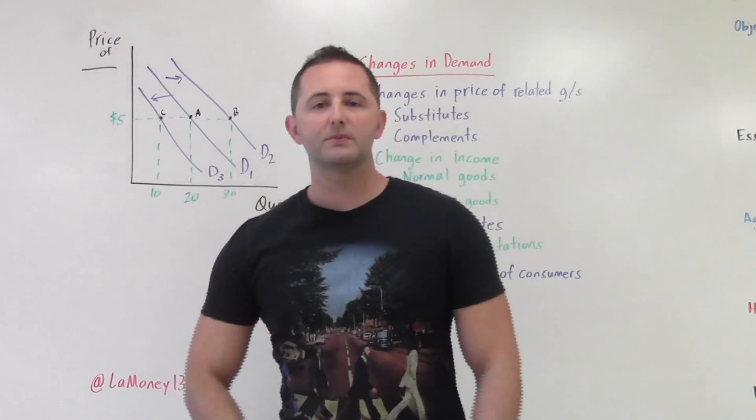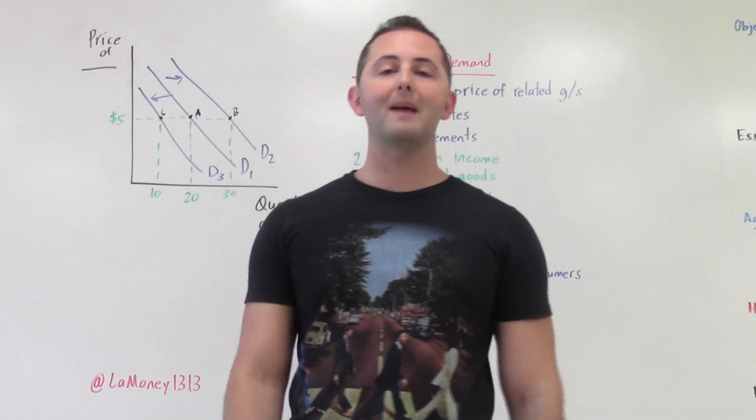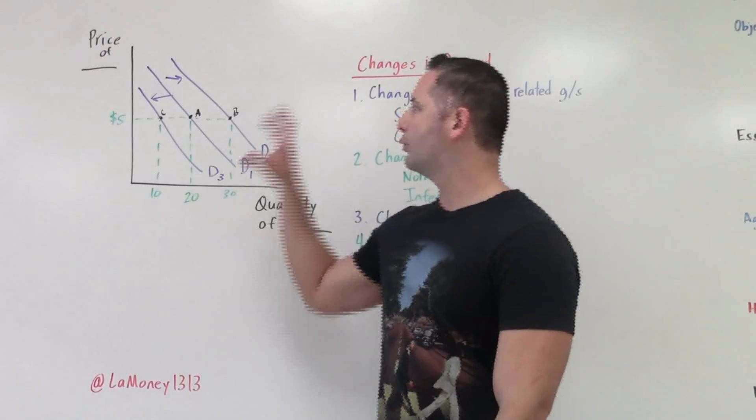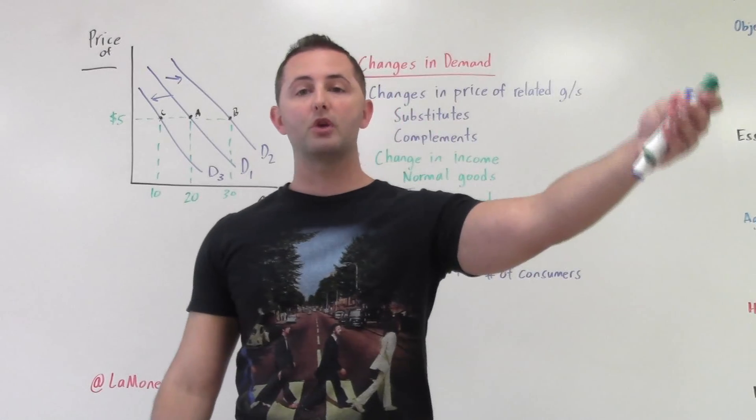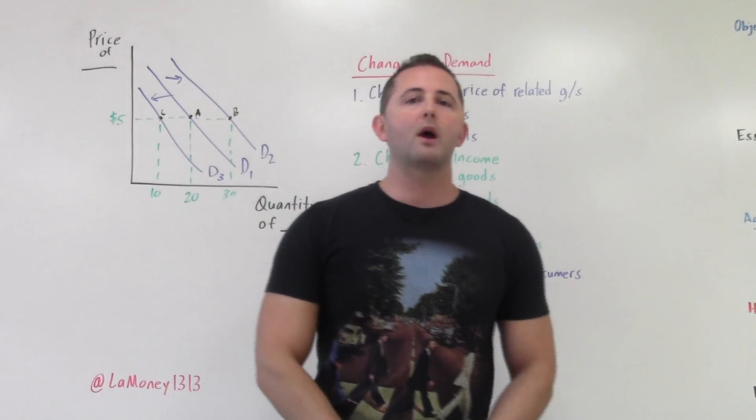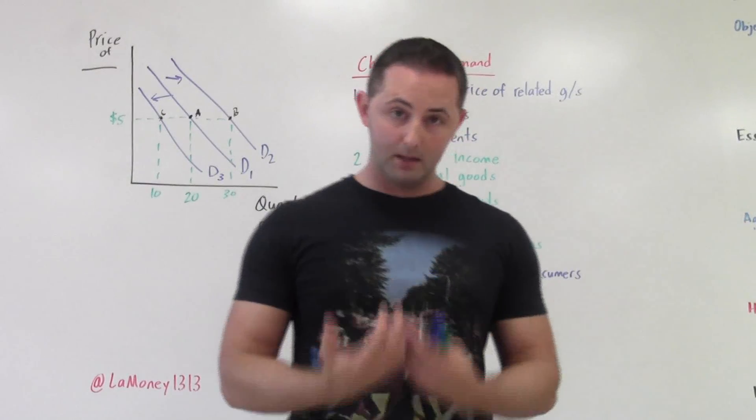Changes in income. This one's pretty basic. If you have more money, guess what you're going to do? You're going to buy more stuff. So our demand increases for things when we have greater income. So the price of the good doesn't change. The price of the dinner, if we're talking about going out to a nice restaurant, the price of the car doesn't change. What changes is that we have more money. So if our income increases, then as a result of that, our demand increases.